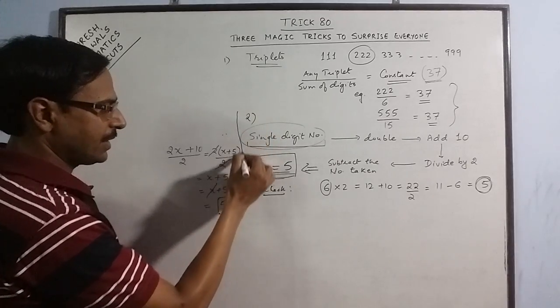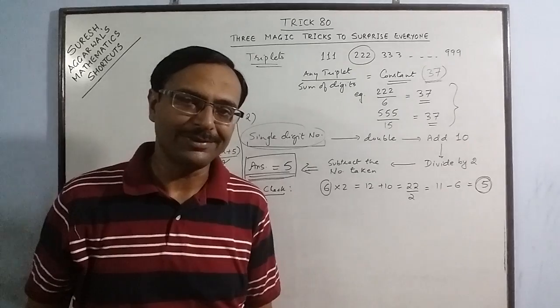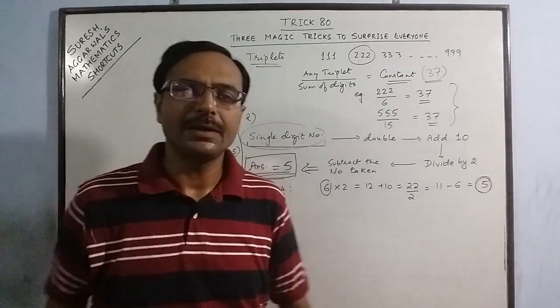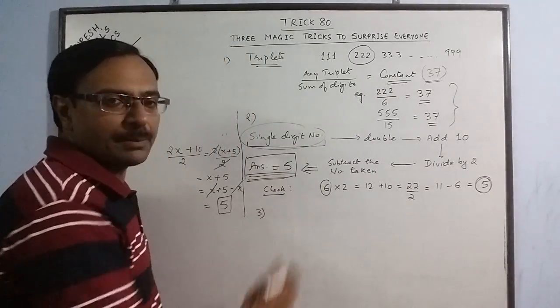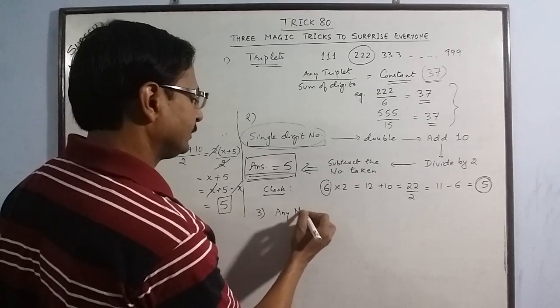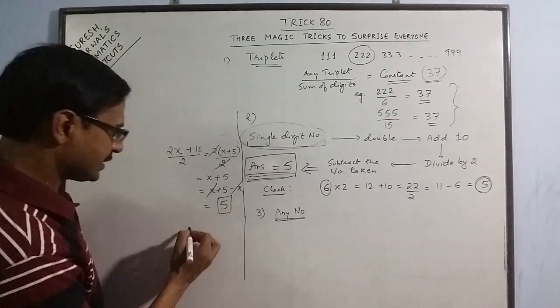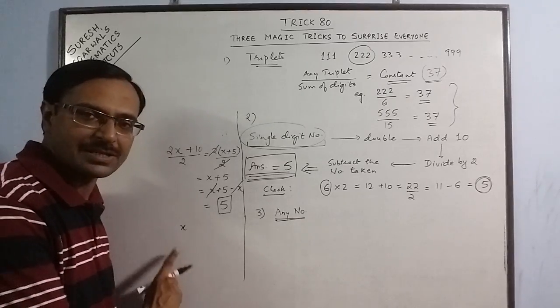So this is the logic behind these tricks, and these little formulations can be done yourself. Let us demonstrate this once more by taking a different example. Now I have taken here the example of a single digit number. Now we have any number. Let us take the number as x. Now here I am telling you how this trick is formulated.